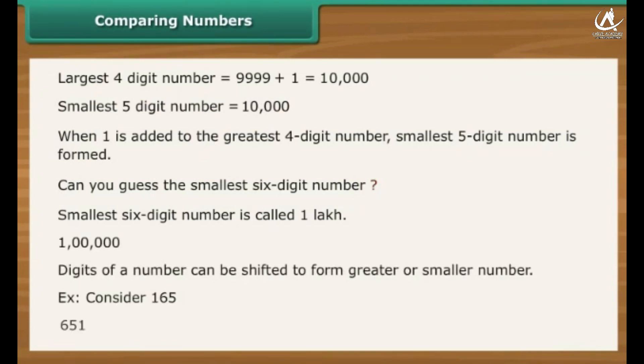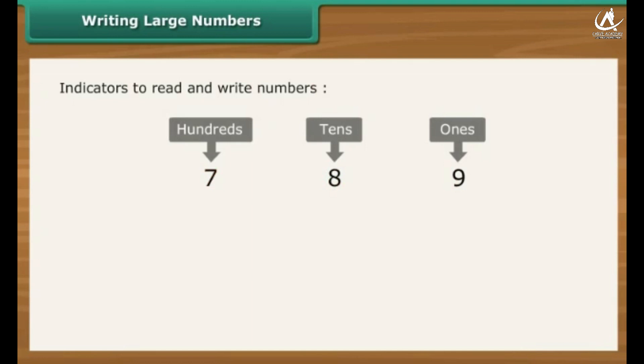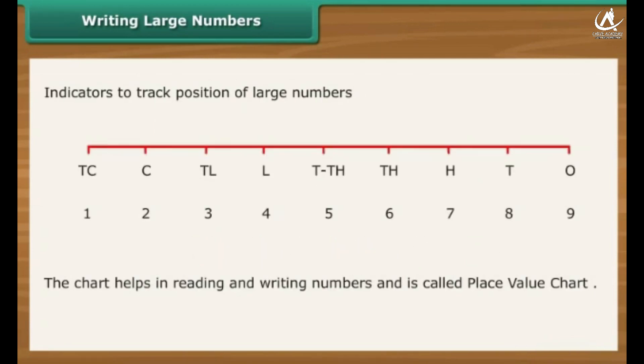Digits of a number can be shifted to form greater or smaller number. Let us see how. Writing large numbers. Sometimes the large numbers are so large that it becomes difficult to keep track of. Then it helps to use indicators to read and write large numbers. In a decimal number system, the value of a digit depends on its place or position in the number. Each place has a value of 10 times the place to its right. It can be extended to crores. The chart helps in reading and writing numbers and is called place value chart.